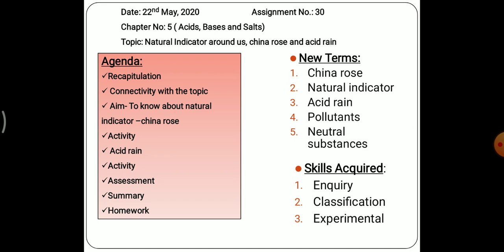We will summarize the topic and at last I will give you homework. In today's session, the new terms we will learn are: China rose natural indicator, acid rain, pollutants, and neutral substances. The skills we will acquire after this topic are inquiry skill, classification skill, and experimental skill. I hope you are all clear with today's agenda.